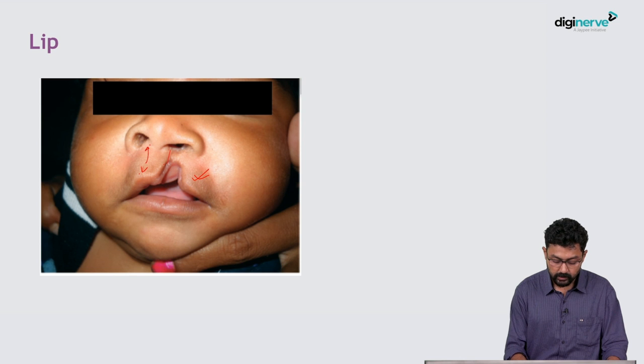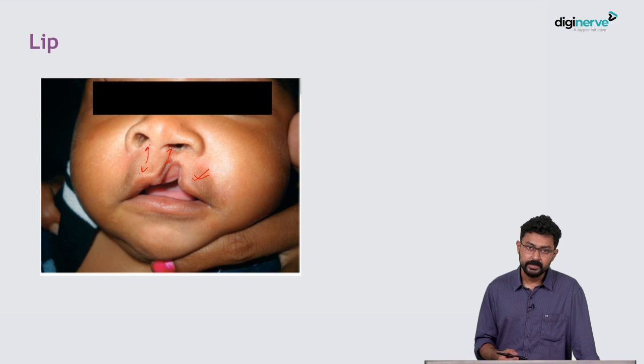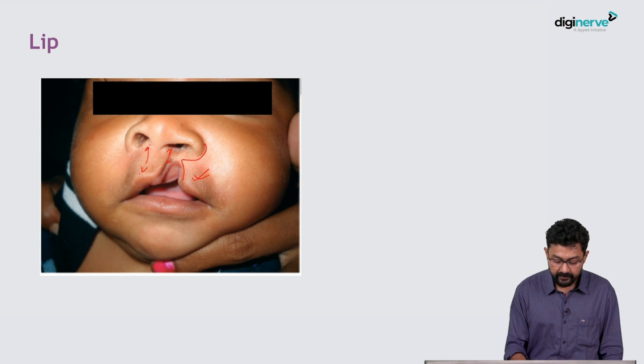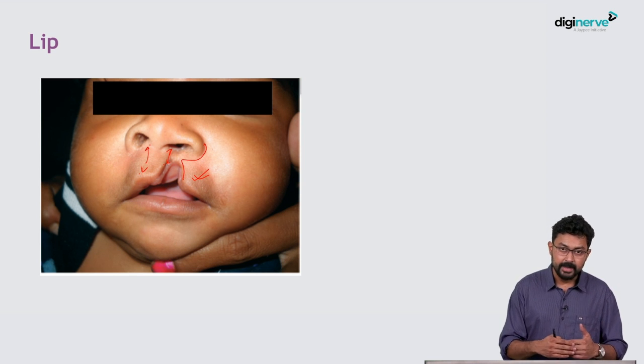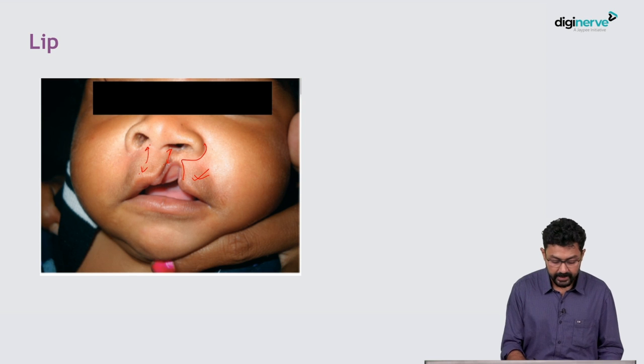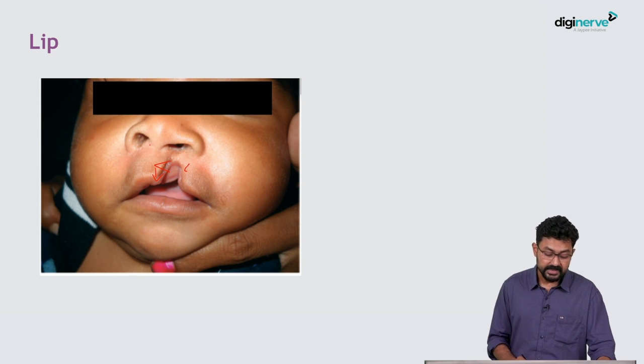Here is the lip point and here is the point, so this columellar height is significantly less. So the principle is to make flaps or make rotation advancements like the Millard's repair by Richard Millard. His point was to achieve columellar deviation from this side and to rotate this flap and increase the medial length. What Tennison suggested is a completely different principle of repair where he would create triangular flaps—an upper triangular flap, upper triangular flaps from these sides, and he would put these flaps here to increase the columellar length.